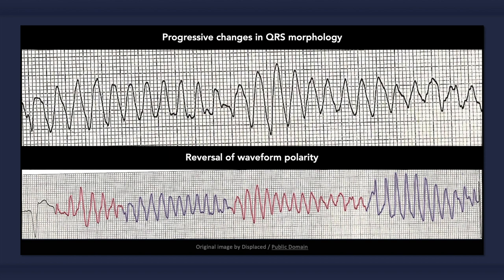Be aware that the rapid and gradual alteration of QRS complexes can be mistaken for ventricular fibrillation. Ventricular fibrillation, however, is completely chaotic without any discernible pattern or similarity between adjacent waveforms.